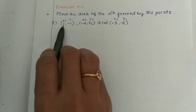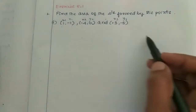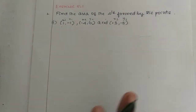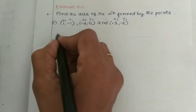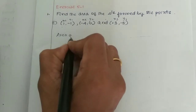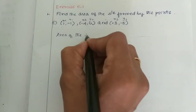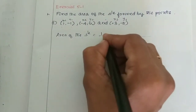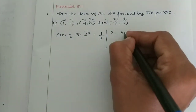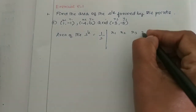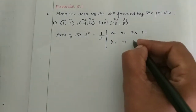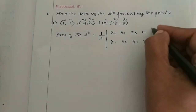This is the first step. This is the second step. The area of the triangle is the third step. Let's write the formula directly: half into x1, x2, x3, x1 and y1, y2, y3, y1.